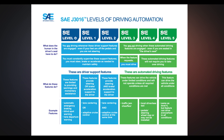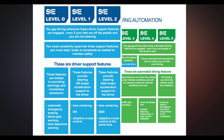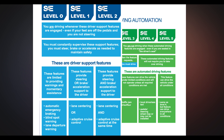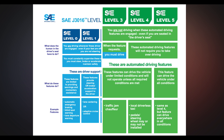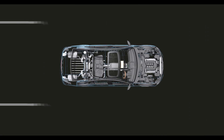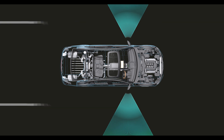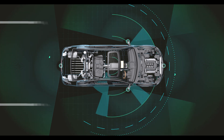The standard designates specific levels of driving automation. Levels 0 to 2 are considered driver support features, while levels 3 to 5 are classified as automated driving systems. Level 0 features are limited to providing alerts, such as lane departure warning for example.